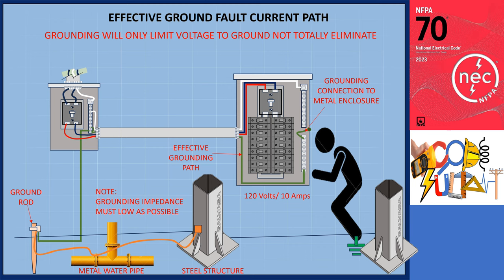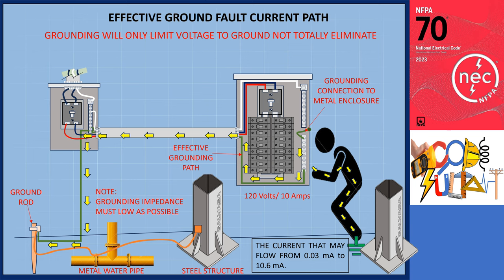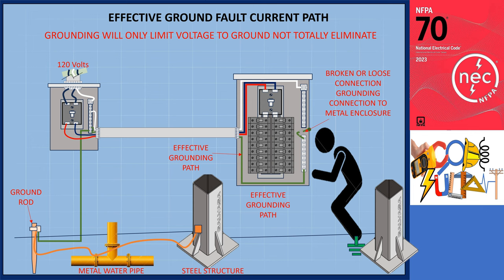In a scenario with a 120-volt, 10-ampere power source, current follows the path of least resistance through the equipment grounding conductor. This can result in personnel being exposed to a potential of 3.19 volts on the conductive surface of the equipment case — at which level, current through a person may range from 0.03 to 10.6 milliamperes. However, with a broken or loose grounding connection to the metal enclosure, the person could be exposed to 116.81 volts, which can be harmless or lethal.